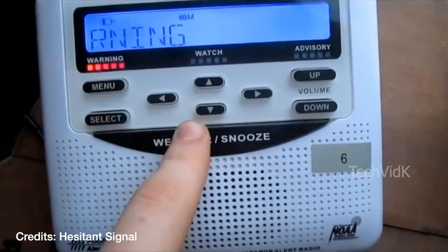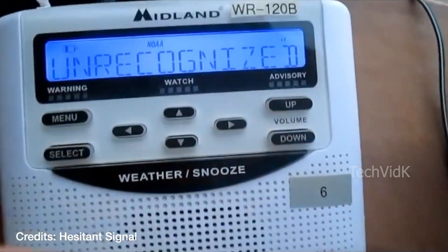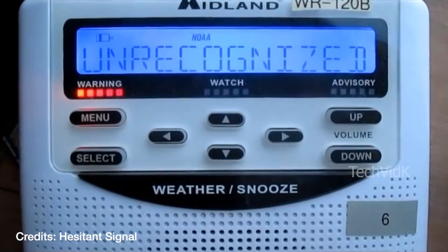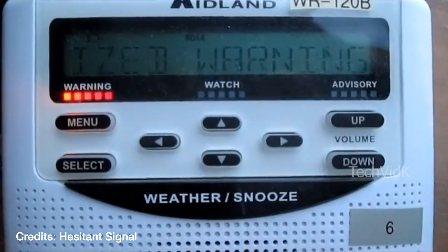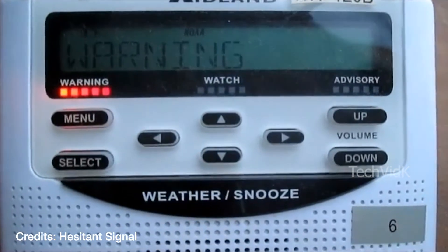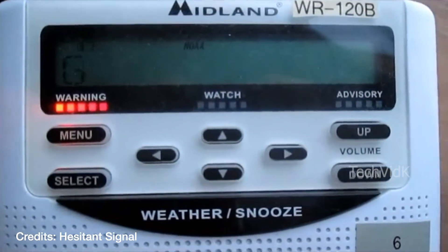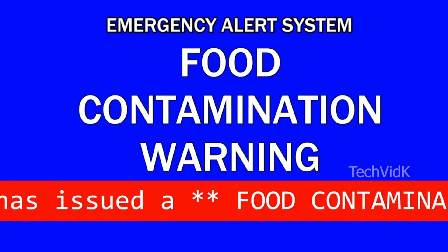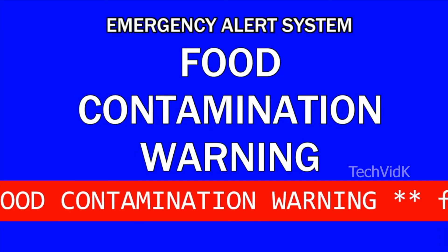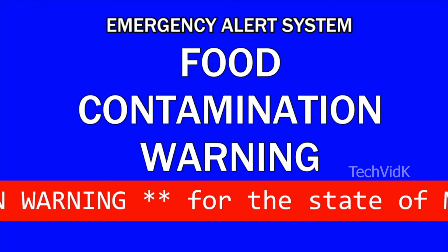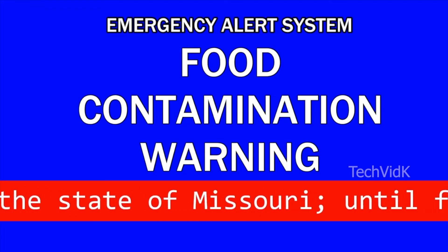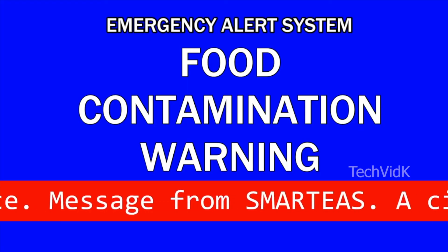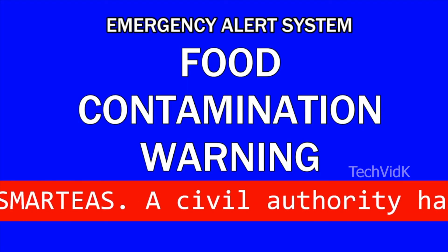Layer 8. Unrecognized message — an error that appears on older NOAA weather radios when they receive a newer EAS alert they haven't been trained to recognize. The alert tones will be the same as usual on a newer model, but the text on screen will read "unrecognized message." This is very rare. Food contamination warning — an EAS alert that hasn't been implemented yet, meant to warn the public of food contamination in their area. This would generally show up as a civil emergency message and has not been seen before.